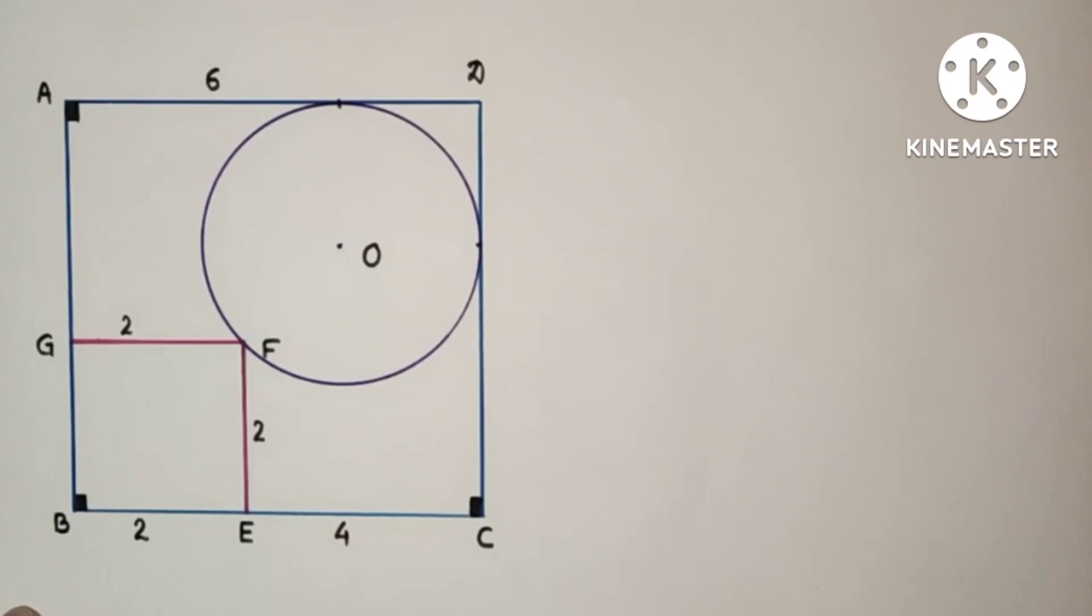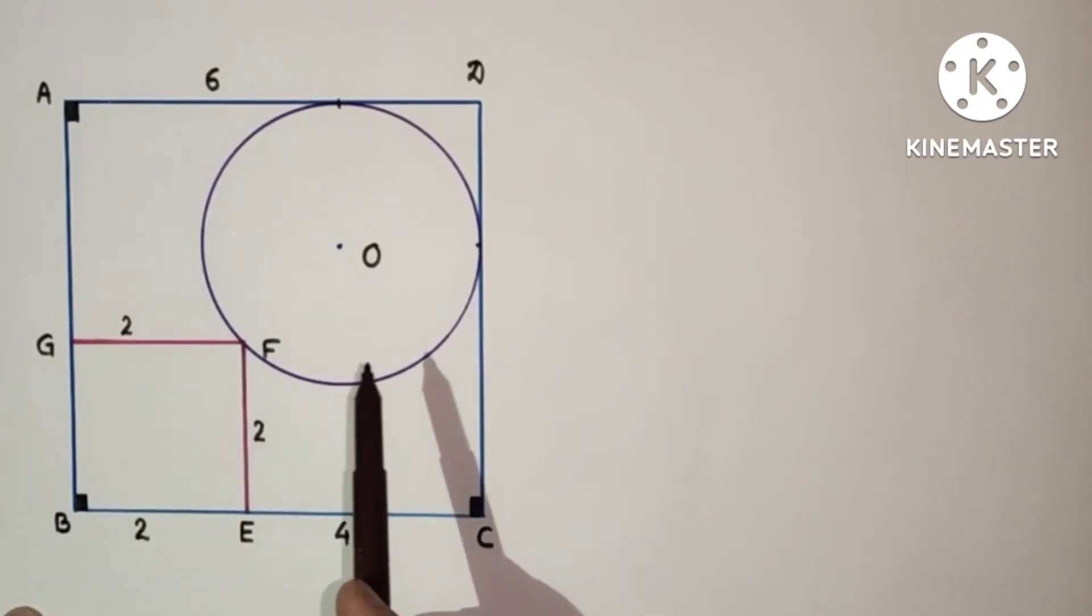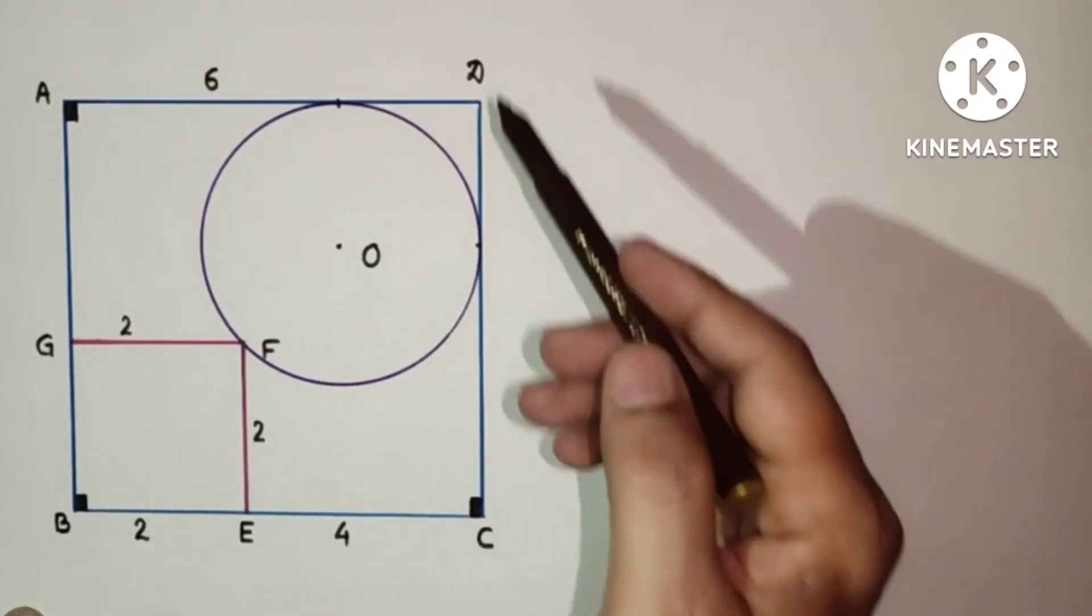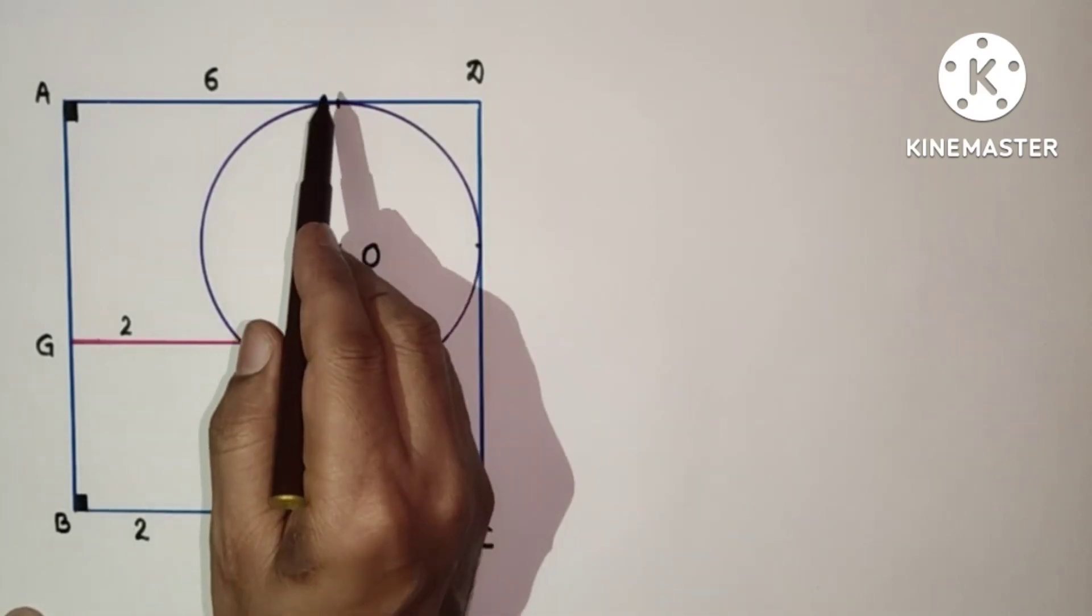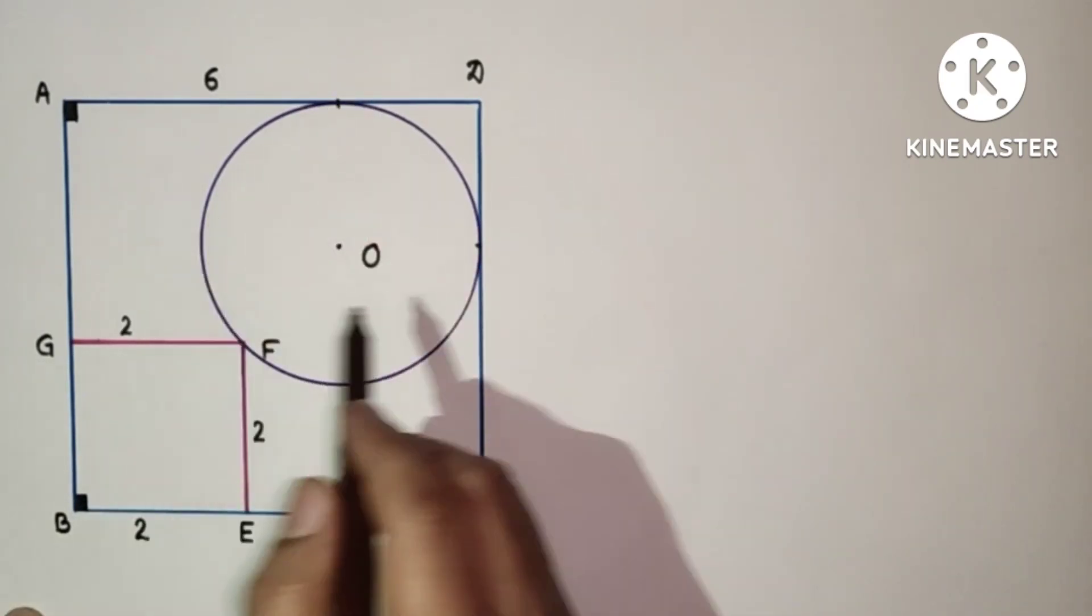Let us name the point where the circle touches the sides AD and DC. Let this point be P and this point be Q.